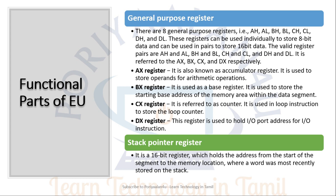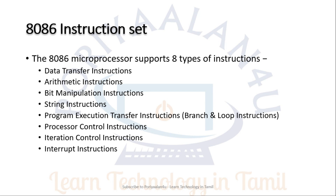There is also a 16-bit Stack Pointer, similar to the 8085, used for jump and call operations. So now we know the specifications of the 8086. There are two major functional units: BIU and EU. BIU handles individual external functions and EU handles the core execution. These are the basics of the 8086.